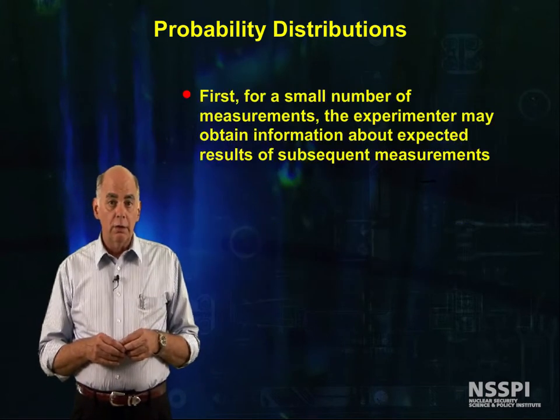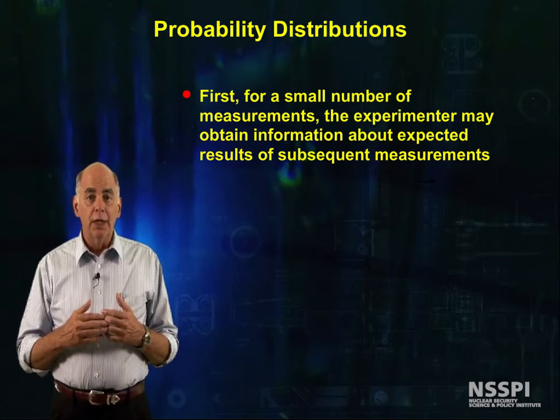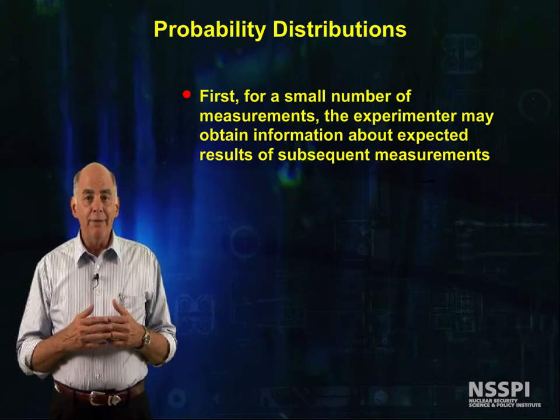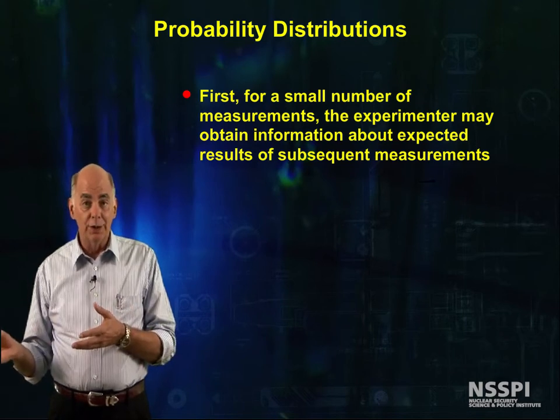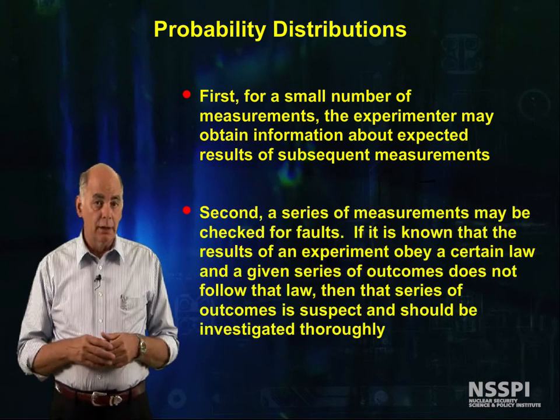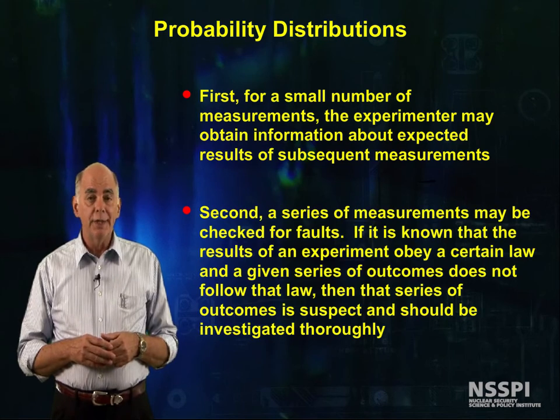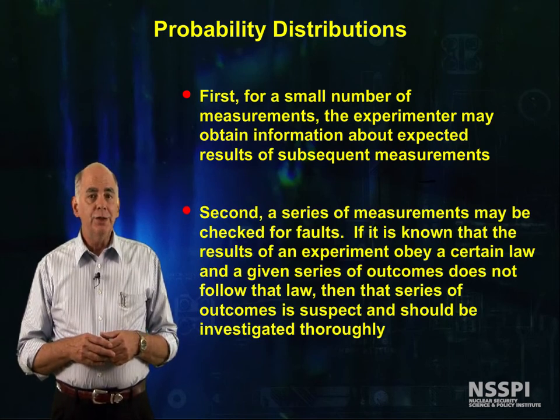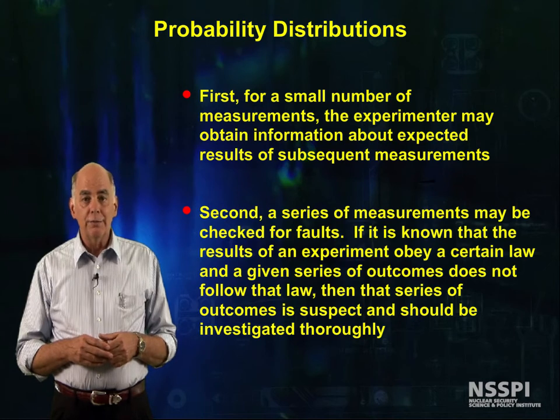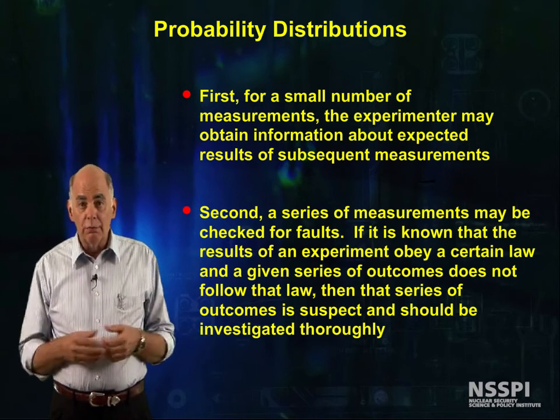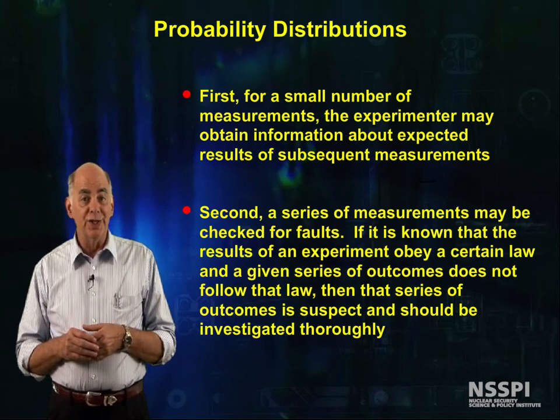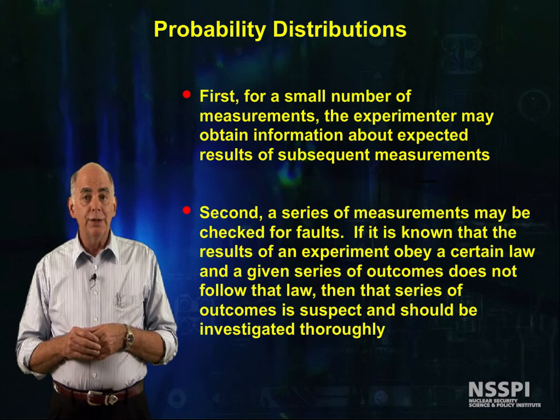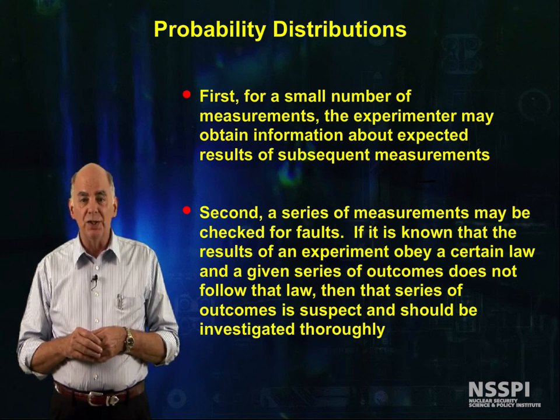First, we could take a small number of measurements, and the experimenter may obtain information about the expected results of subsequent measurements. Second, a series of measurements may be checked for faults. If it is known that the results of an experiment obey a certain statistical law, and a given result of measurements does not follow that law, then that series of outcomes is suspicious and should be investigated thoroughly.